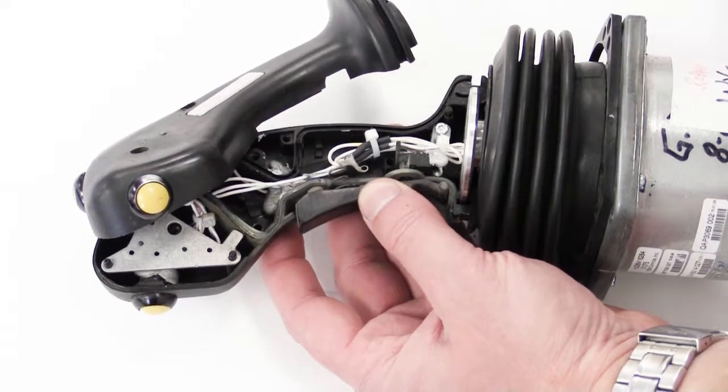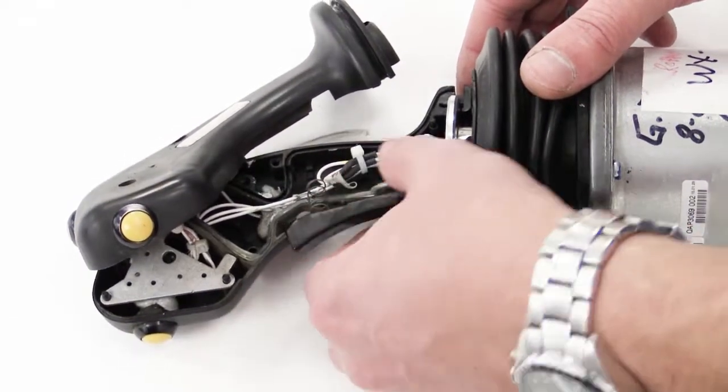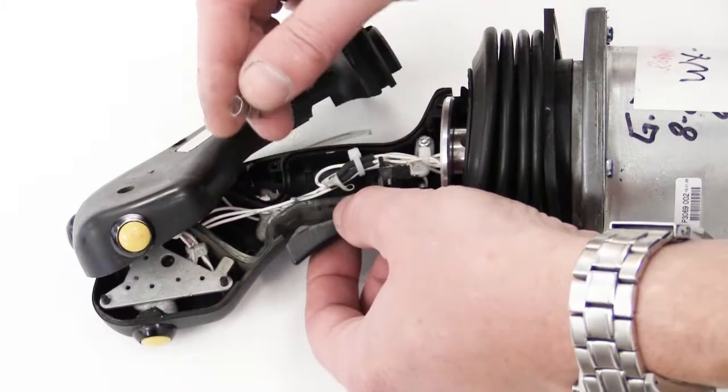Once separated, you can remove the dead man lever and spring from the joystick handle housing.